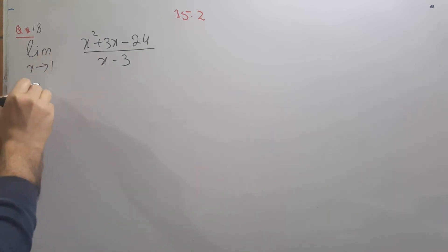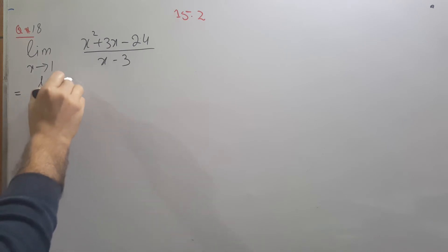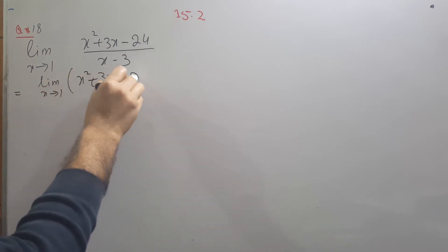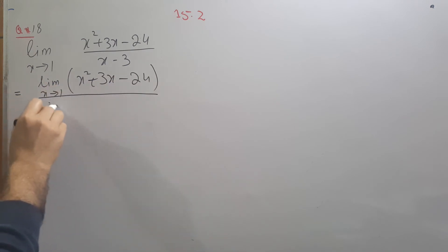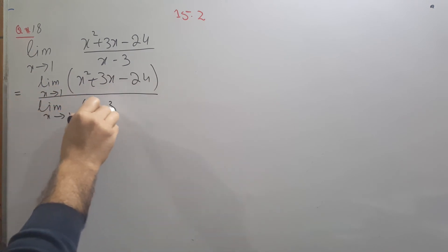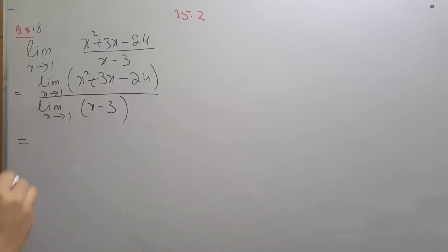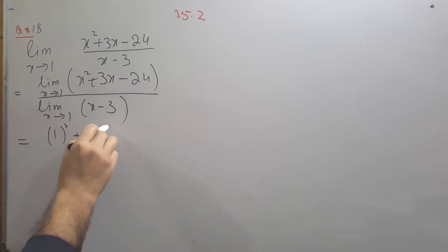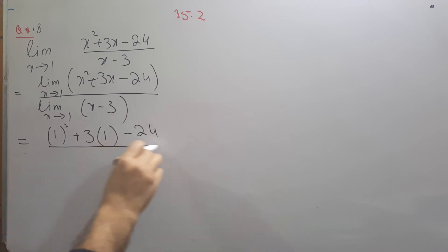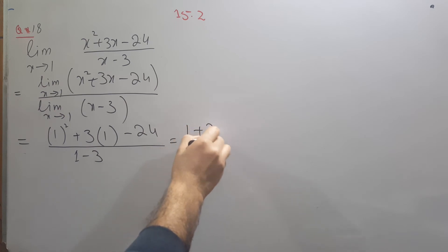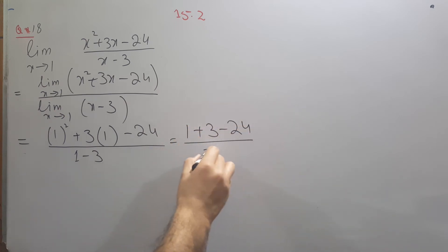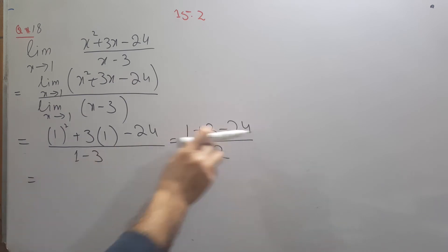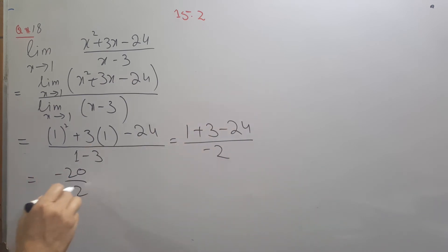Question number 18: apply the limit on the numerator and denominator. Substituting x equals 1: in the numerator, x squared becomes 1 squared plus 3 times 1 minus 24, giving 1 plus 3 minus 24 equals minus 20. In the denominator, substituting 1 gives minus 2. Minus 20 divided by minus 2: the negatives cancel, giving a value of 10.